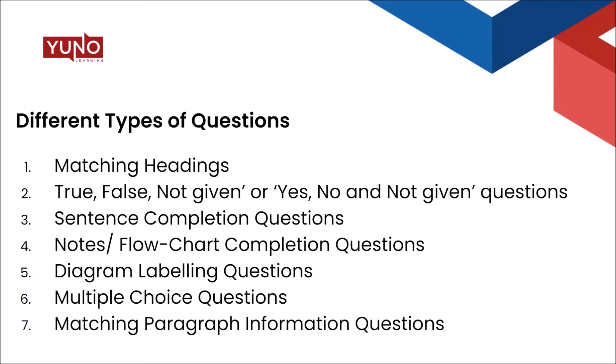There are diagram labeling questions, where a diagram is given based on the text and you label it. Multiple choice questions give you a question stem with three options — you select which option correctly answers the stem. Matching paragraph information questions involve longer passages where you match information to specific paragraphs. Note that in matching headings or matching paragraph information questions, if there are five paragraphs, you may get eight options — three may be redundant. Many students get confused with these types.